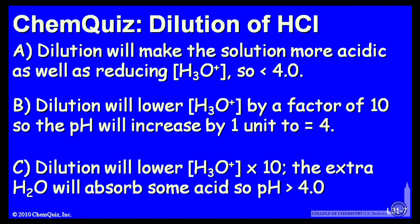Let's look at a possible explanation for each answer. A: dilution will make the solution more acidic, as well as reducing the H₃O⁺ concentration, so the pH is less than 4. B: dilution will lower the H₃O⁺ concentration by a factor of 10, so the pH will increase by 1 to 4. Or C: dilution will lower the H₃O⁺ concentration by 10, and the extra H₂O will absorb some acid, so the pH will be greater than 4. Think about those three possible explanations and make a selection.